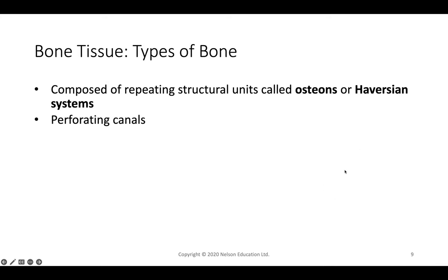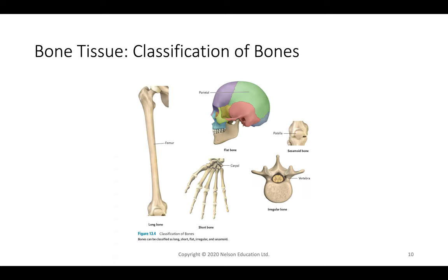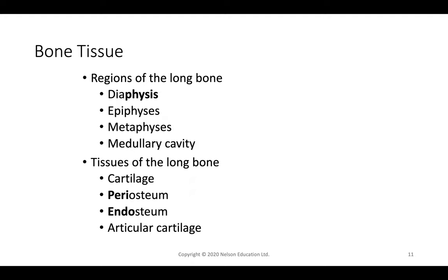We classify bones in several ways. Long bones include the femur and humerus. Short bones include the carpals — eight wrist bones in two sets of four designed for good articulation. Flat bones include the skull and scapula. The sesamoid bone is the patella, shaped like a sesame seed. Anything that doesn't fit a clear category — like vertebrae — is classified as an irregular bone.